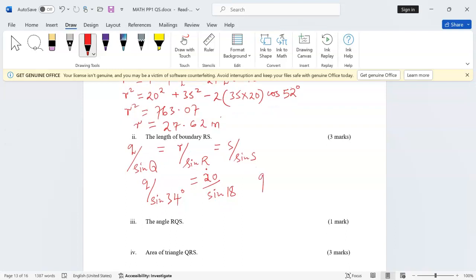For us to remain with q, we have to multiply 20 by the sine of 34, then we divide by the sine of 18. This length is going to be 20 times sine of 34 divided by sine of 18. This gives us 36.19. These are meters, remember.